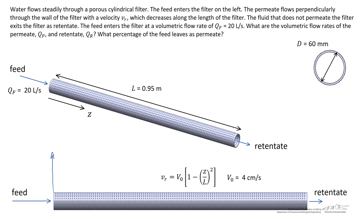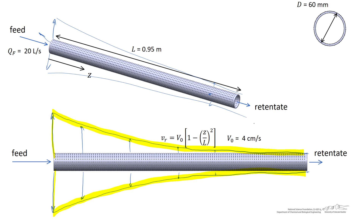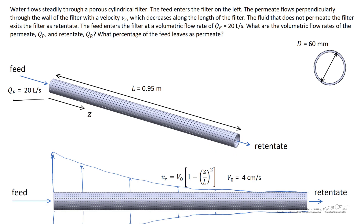When we graph the velocity of the fluid leaving the filter, it's parabolic in nature, starting out at v naught and decaying to zero by the exit of the filter. If we were to graph the velocity of the permeate from the side view, we would see permeate flowing upward and downward. It's also flowing radially outward, with the highest value at the entrance of the filter and the value decaying to zero towards the exit. A crude graph of the permeate velocity from a side view would look something like this.